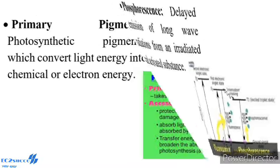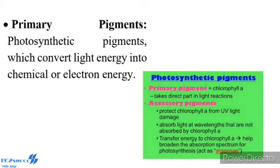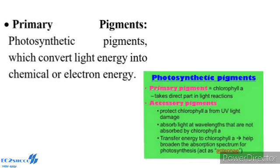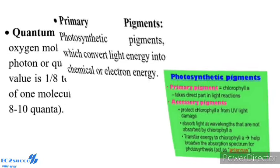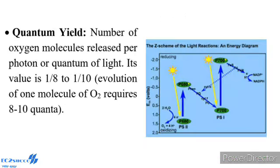Primary Pigment: Photosynthetic pigments which convert light energy into chemical or electron energy. Quantum Yield: The number of oxygen molecules released per photon or quantum of light. Its value is 1/8 to 1/10, meaning evolution of one molecule of oxygen requires 8 to 10 quanta of light.